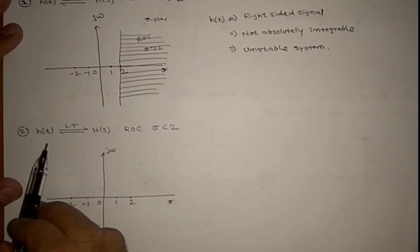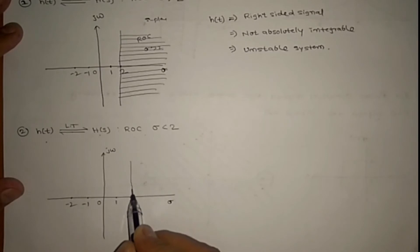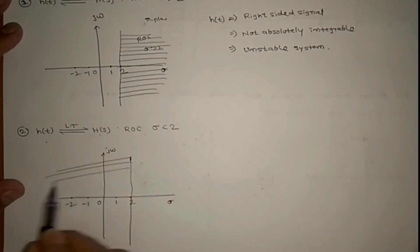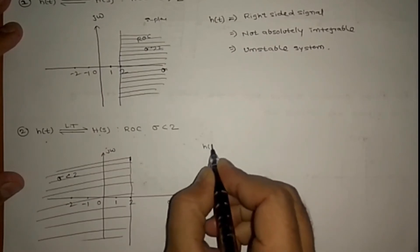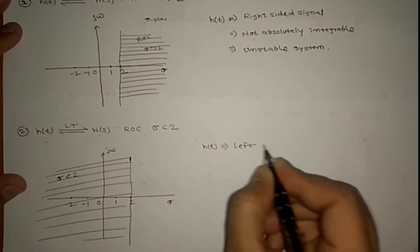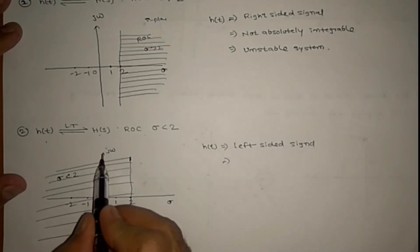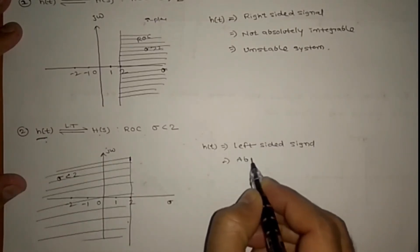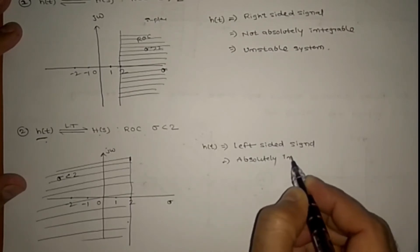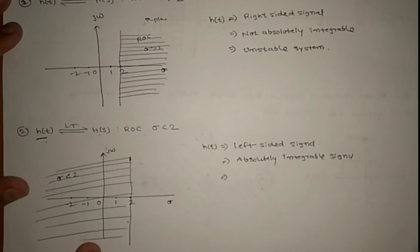Example 2: H(t) has Laplace transform H(s) with ROC σ < 2. This ROC is the complete left side of σ = 2 in the s-plane. Therefore, H(t) is a left-sided signal. The ROC includes the jω axis, which means the signal is absolutely integrable, and in terms of the system, it is a stable system.